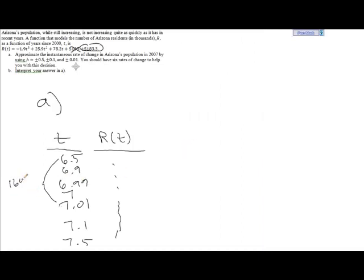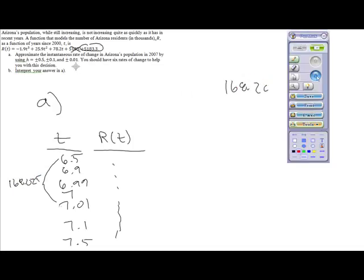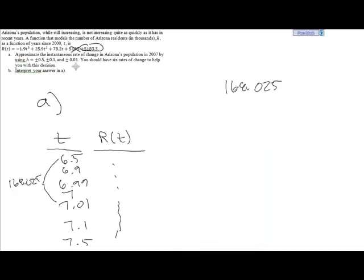We get 168.025. The output is the number of residents in 1,000, so 1,000 residents. And the input variable is the year. So this is telling us that Arizona's population is going up by 168,025 people per year in the year 2007, which is quite big.